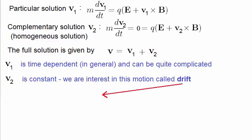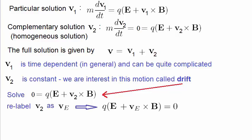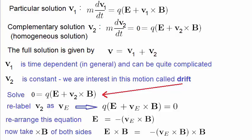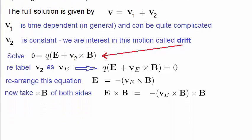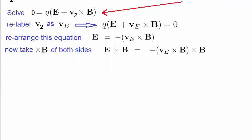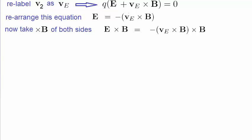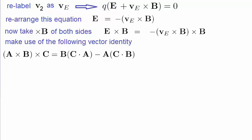We can solve for the drift velocity by equating the right hand side of the Lorentz equation to zero, because it's part of the homogeneous equation. Let's relabel the drift velocity v2 as ve, just to be consistent with the textbook. Now rearrange the equation. To make further progress we do a little trick — we take the cross product of both sides with the magnetic field vector B. In order to make further progress we have to make use of one of the many vector identities, which you can find in any vector calculus book. The cross product A × (B × C) is equal to the expression given on the right hand side.